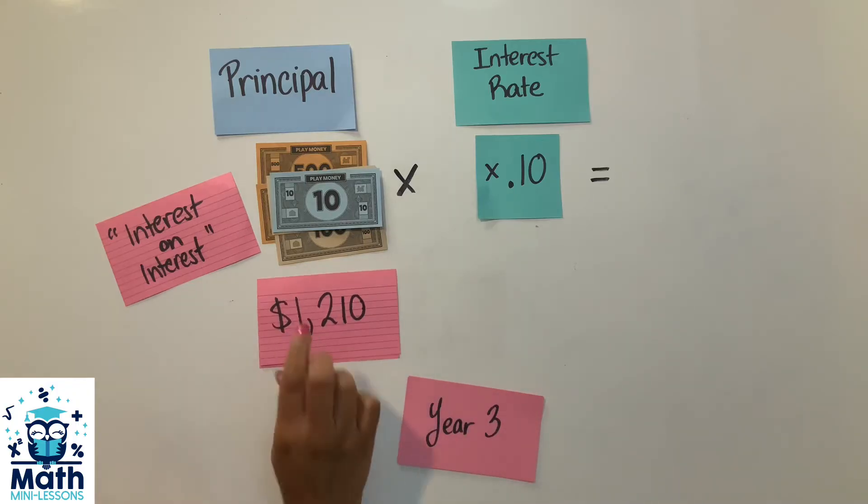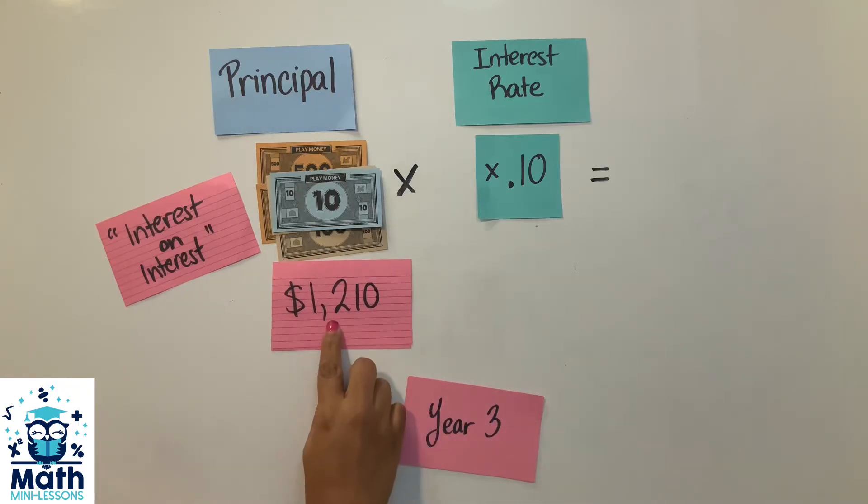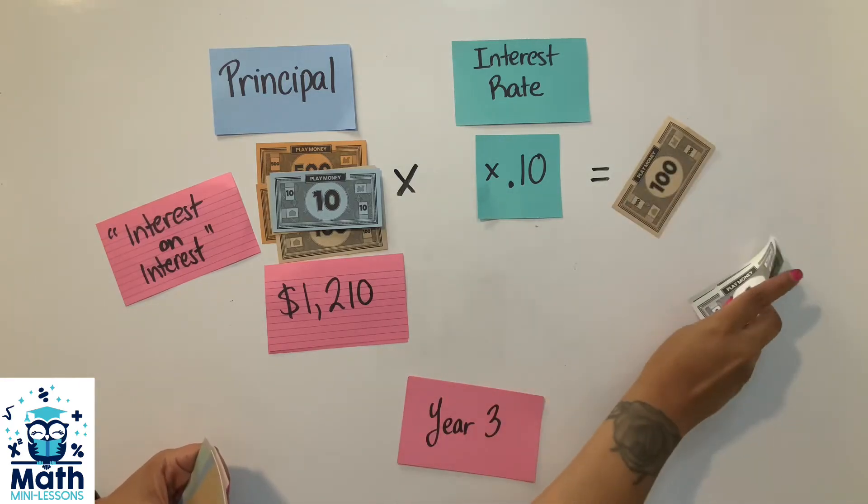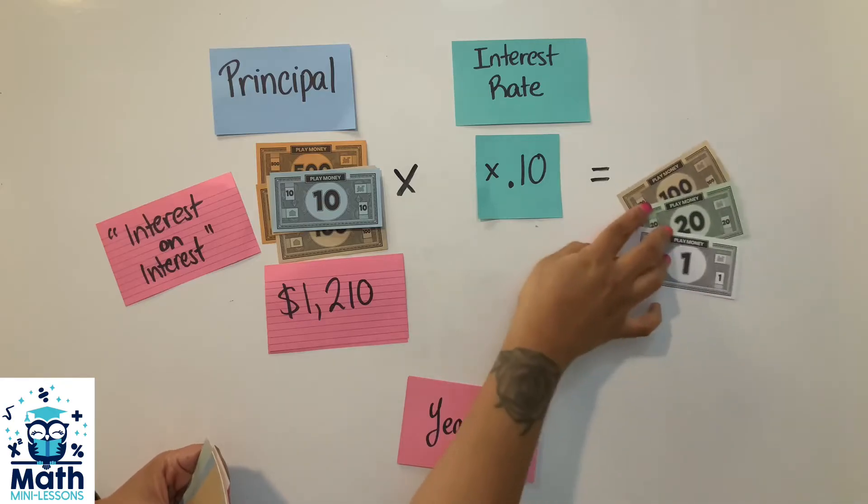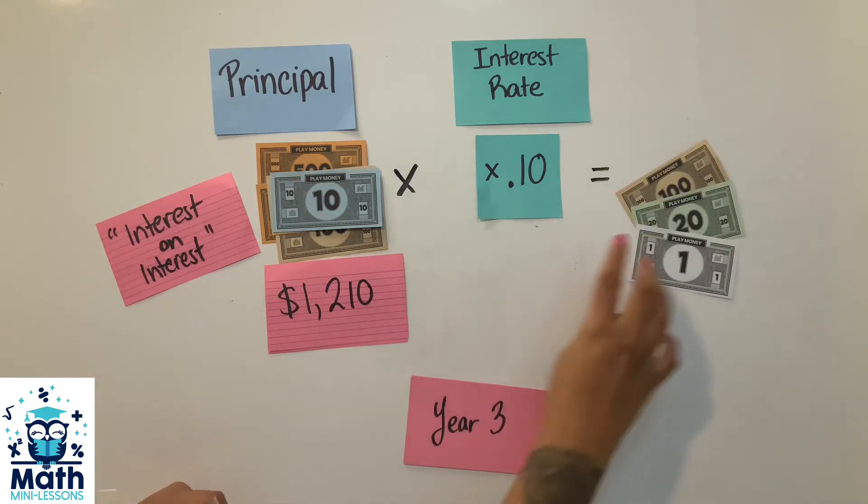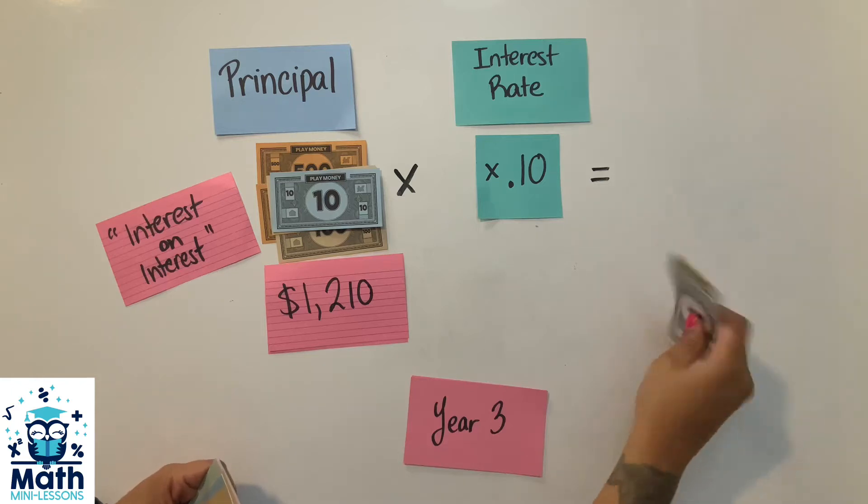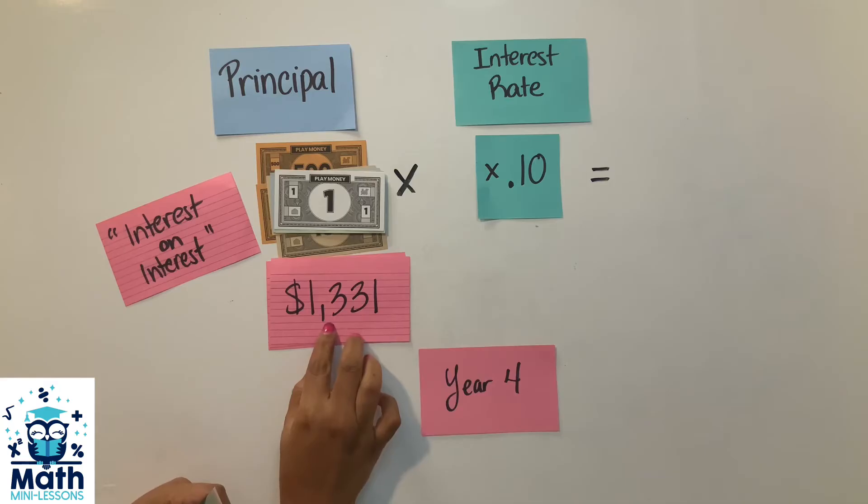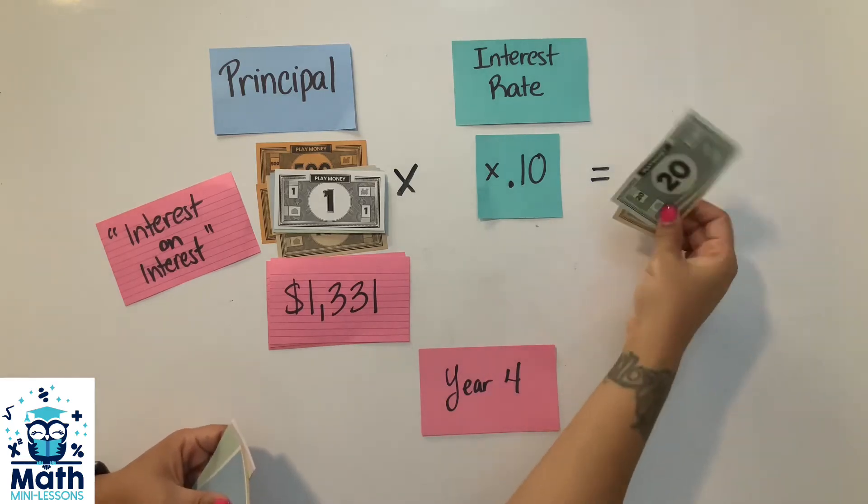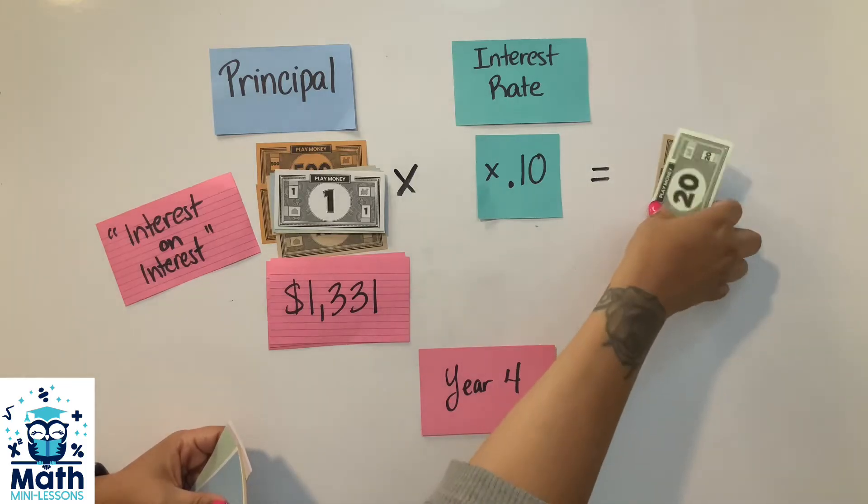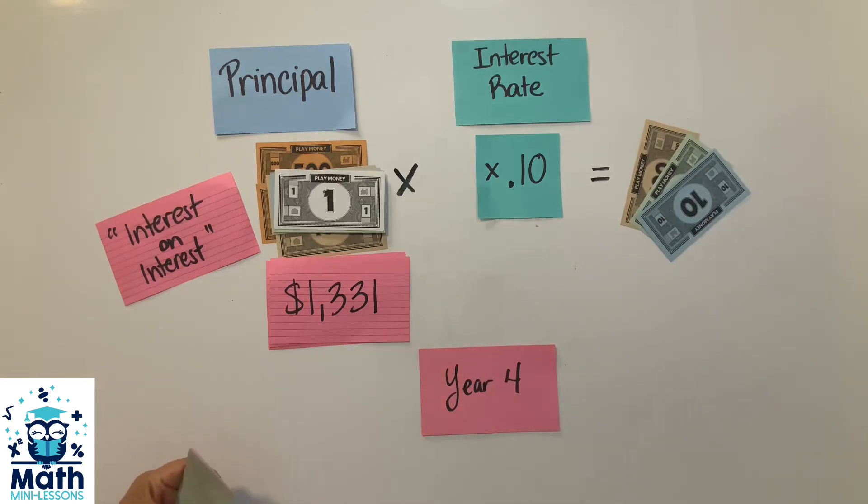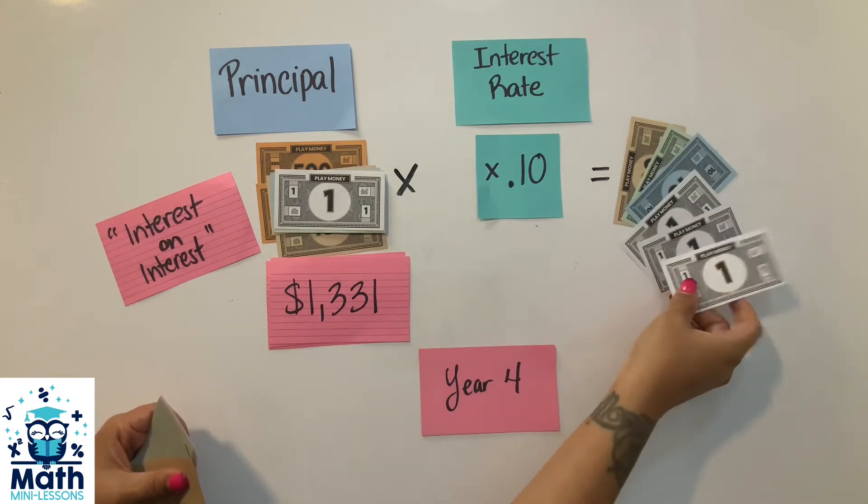In year three I am finding 10% of this amount, so I'm paying $121 in year three at 10%. So I keep compounding - compounding is putting the money in there - and in year four I'm finding 10% of this amount now, and so that is $133.